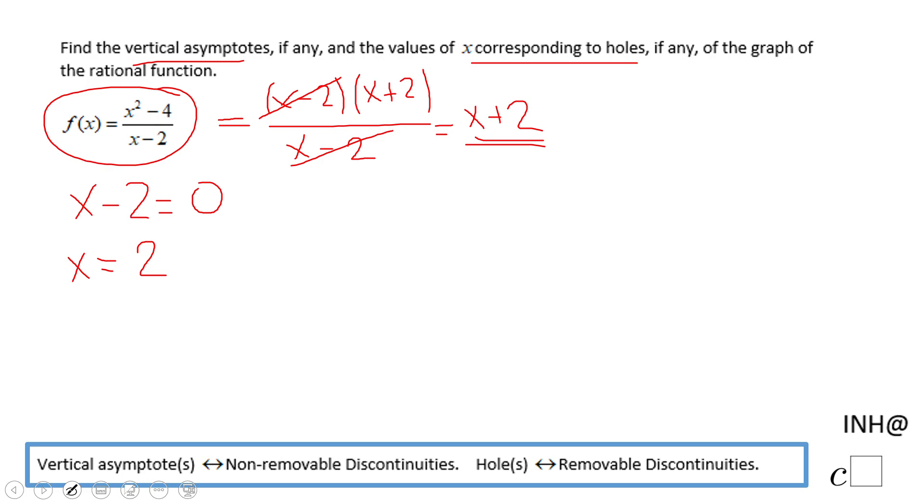We notice that this x minus 2 one more time disappears. We remove it. So that means this x equals 2 is removable, which means it's a hole, it's not an asymptote. Even though we get this x equals 2 by setting up the denominator equal to 0, it's not an asymptote, it's a hole.